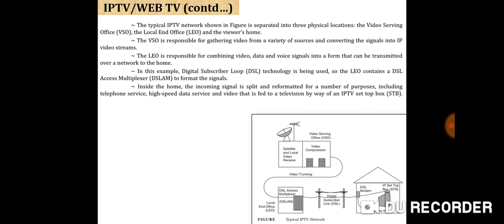Depending on the network architecture of the service provider, there are two main types of video service server architecture for IP TV deployment: centralized and distributed. The centralized architecture model is a relatively simple and easy-to-manage solution because all media content is stored in centralized servers. It does not require a comprehensive content distribution system and is generally good for networks with relatively small video-on-demand deployments. In the case of distributed architecture, it is just as scalable as the centralized model, but has bandwidth usage advantages and system management features essential for managing a larger server network. Operators planning to deploy a relatively large system should consider implementing a distributed architecture model from the start.